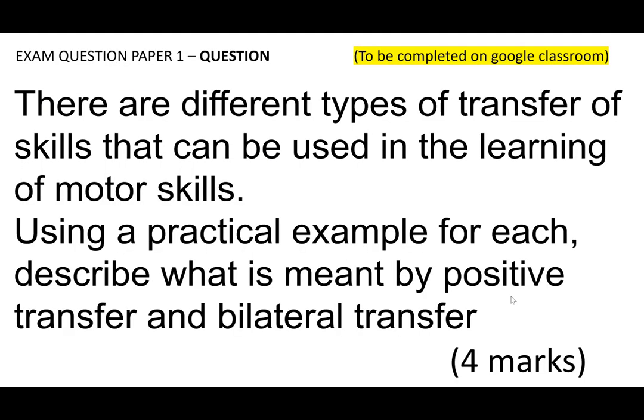Start with retrieval practice. Complete this on Google Classroom or on your notes and take a photo of it for me. This is a Paper Two question — skill acquisition. 'There are different types of transfer. Skills can be used in the learning of motor skills. Using a practical example for each, describe what is meant by positive transfer and bilateral transfer.' That's four marks — one mark for describing positive transfer, one for a practical example, and the same for bilateral.